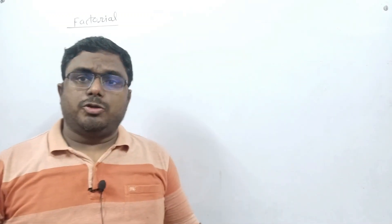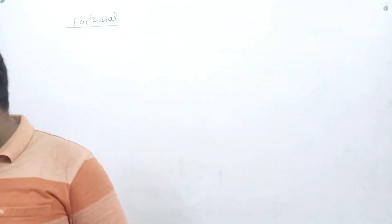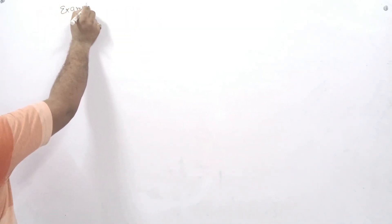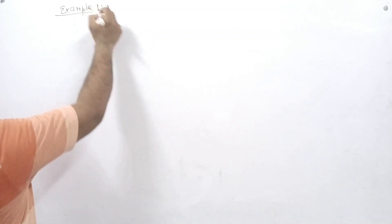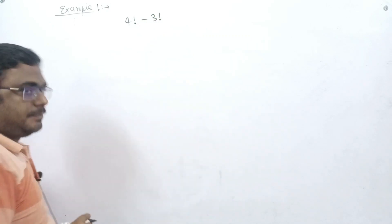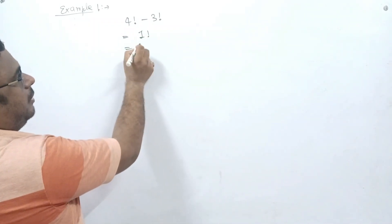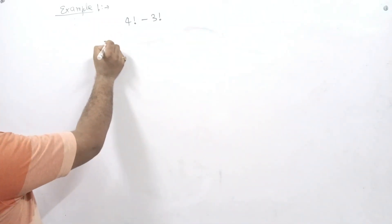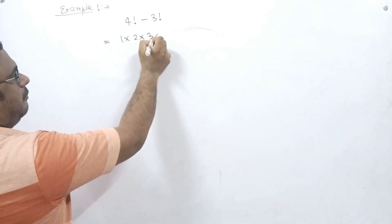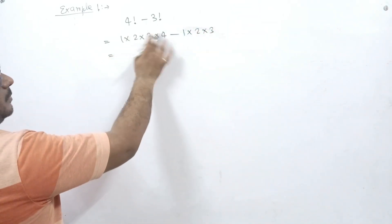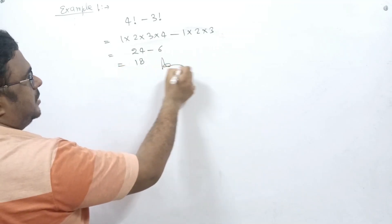Example 1: 4! − 3!. The wrong way is to say (4−3)! = 1! = 1. The correct way is to expand: 4! = 1×2×3×4 = 24 and 3! = 1×2×3 = 6, so 24 − 6 = 18 is the answer.